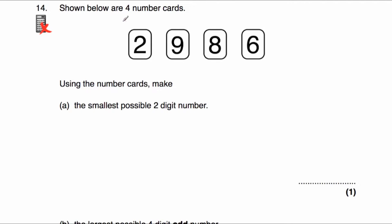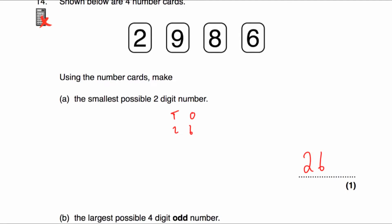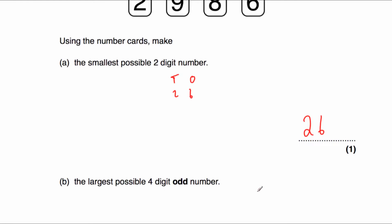Question number 14: we've got four number cards — 2, 9, 8, and 6. Using the cards, make the smallest possible two-digit number. We want to put the smallest number in the tens column to make it as low as possible. So put 2 in the tens column (making it in the 20s), and then use 6 in the ones column as the second smallest. The smallest possible two-digit number is 26.